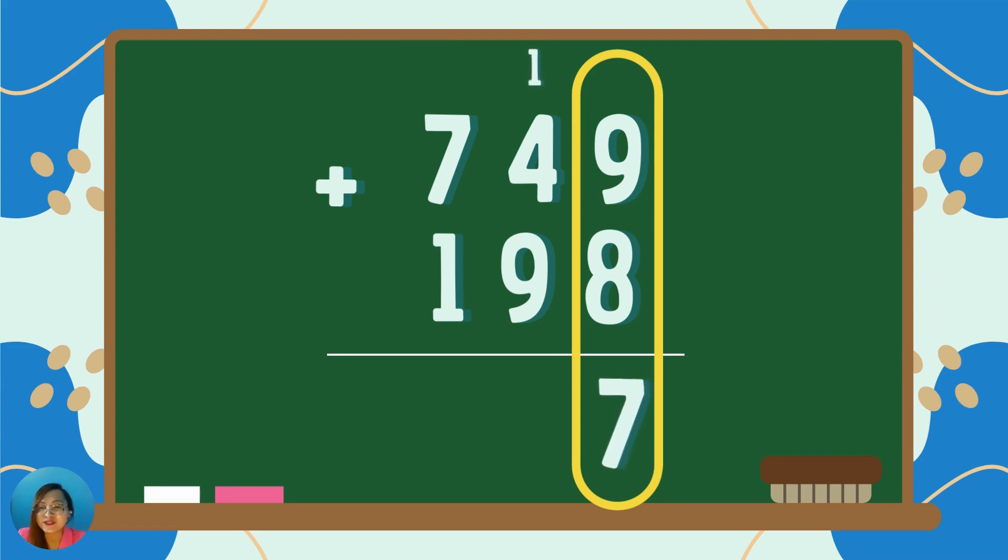So, we need to regroup. Write 7 in the one's place and carry 1 to the tens place. There you go, Caleb!